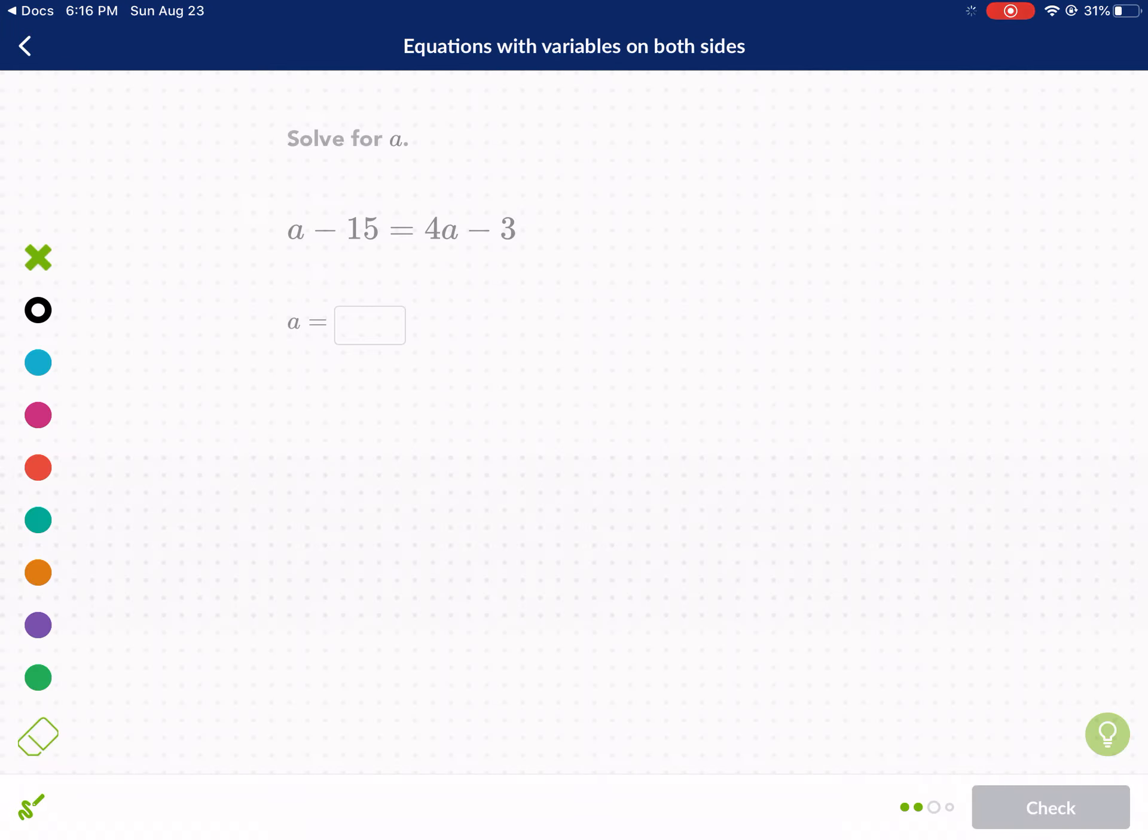This one should be fairly quick. I'm going to try to do all these examples for you. We have a minus 15 equals 4a minus 3. Nothing to combine on each side. Let's jump into combining our variables first.